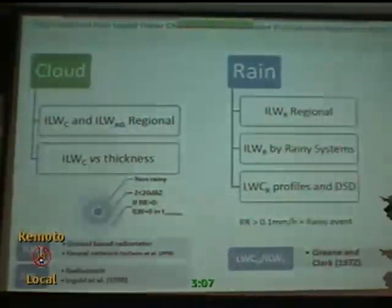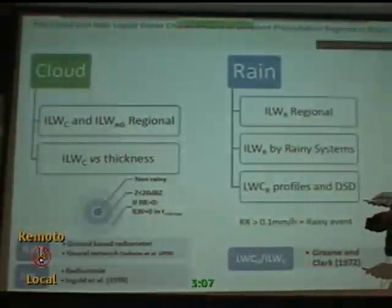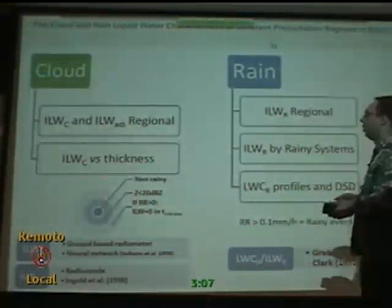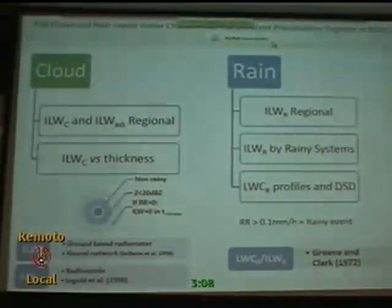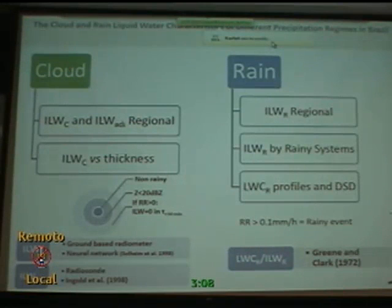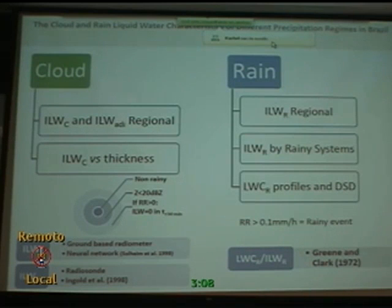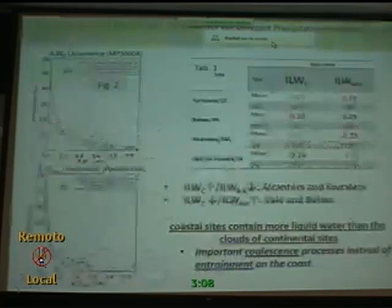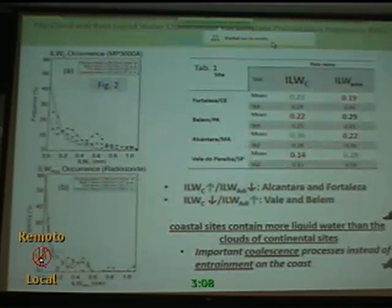I have to analyze the regional distribution and the liquid water content for clouds in relationship with their thickness. The rain liquid water content was defined just using the rain rate from the distrometers, and I have used 0.1 millimeters per hour to define what is a rain event. I am using the Green & Clock strategy to determine the liquid water content and integrate it in a profile, using the corrected data from the radar.